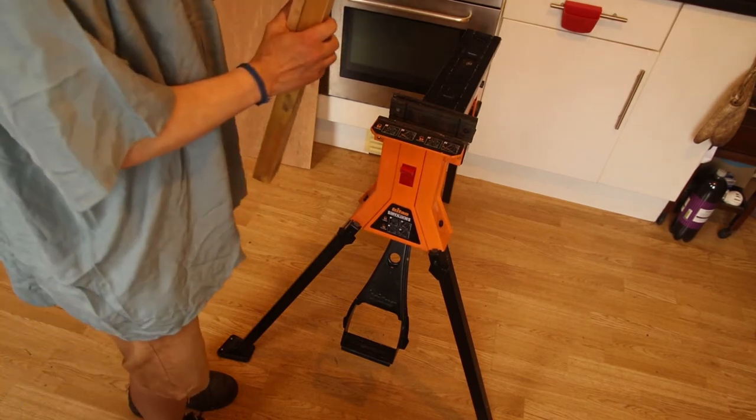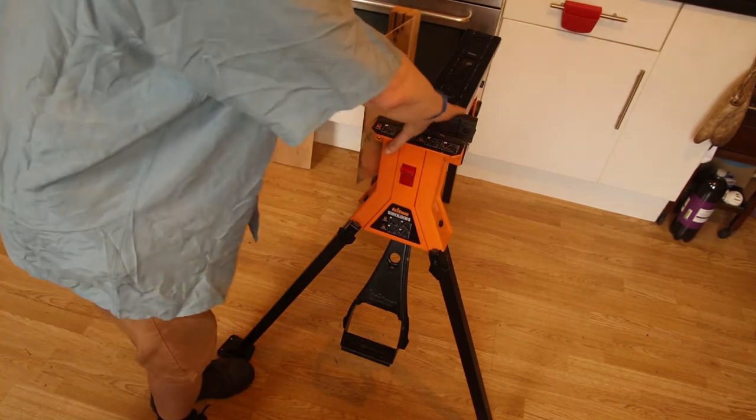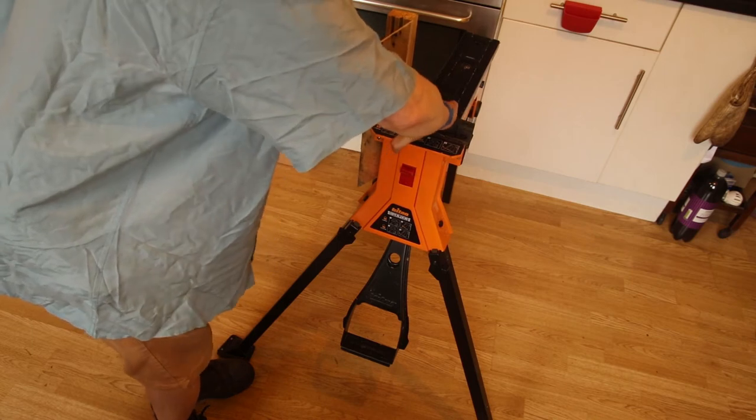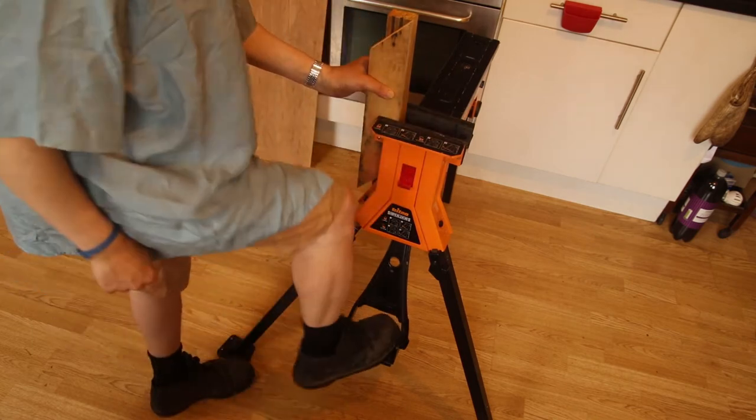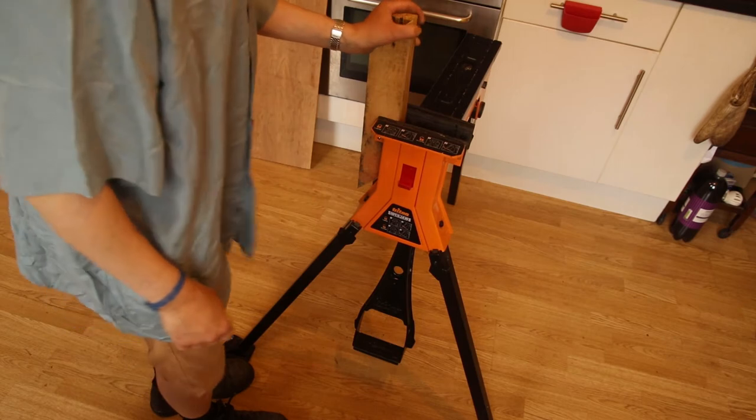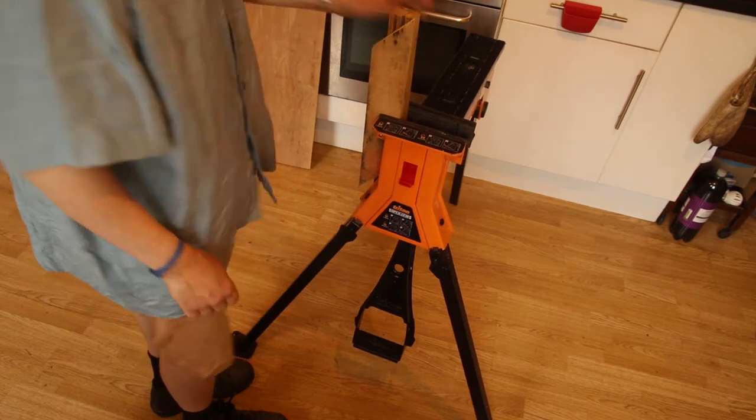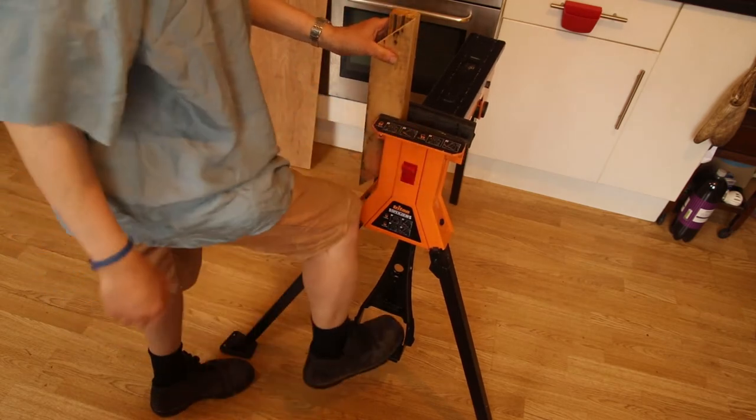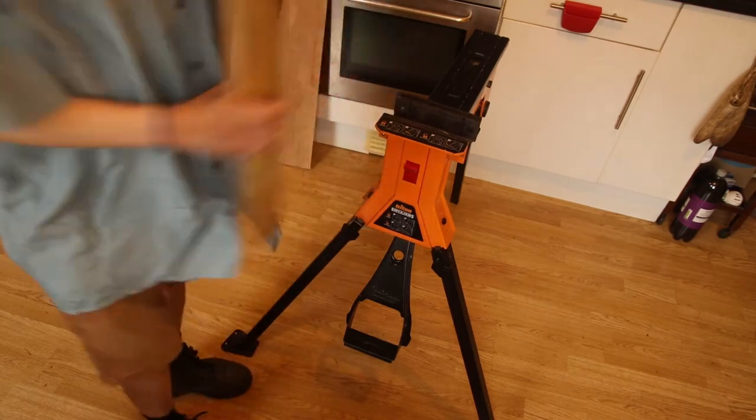The great thing about this operation is you only need one hand and a foot to do it, so you can hold two bits of work together like I'm doing here, maybe for gluing, and carry on holding them while you clamp them. None of that trying to do the one-handed tightening of the vice while holding them at the same time.